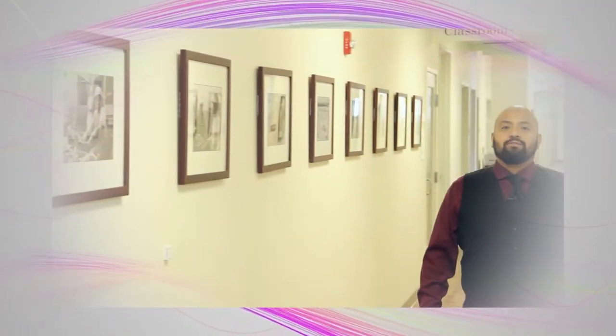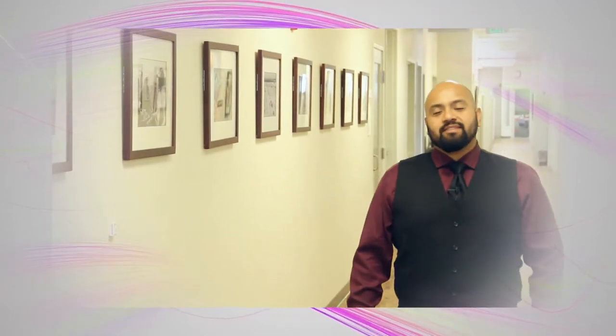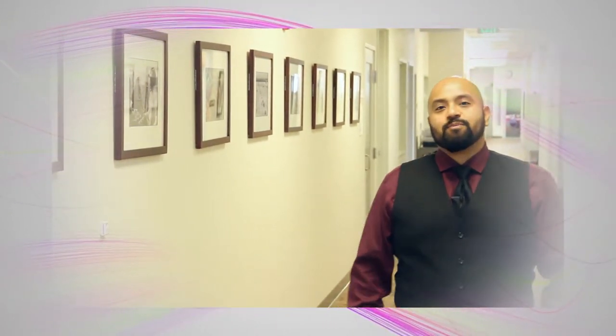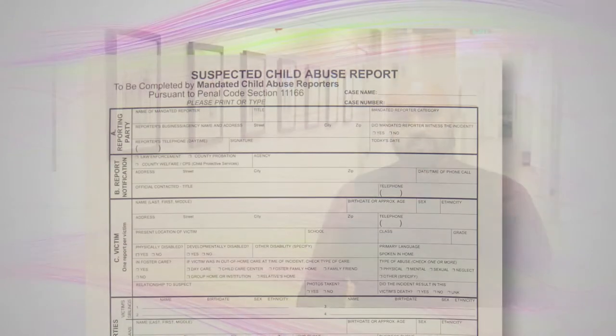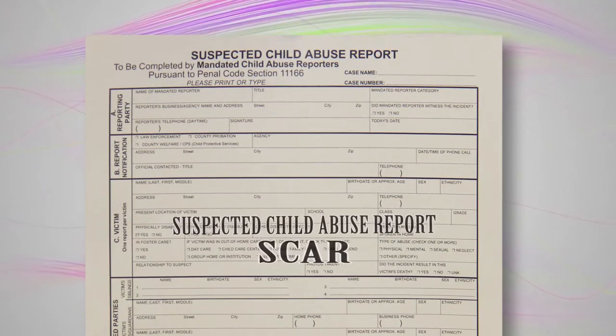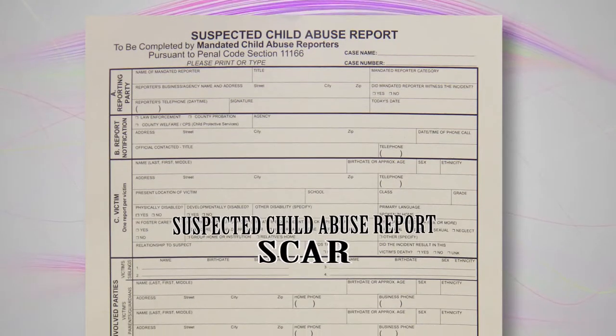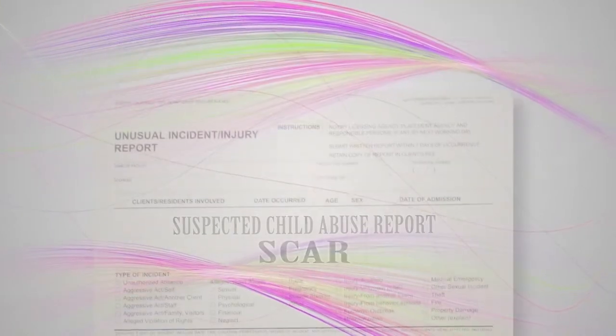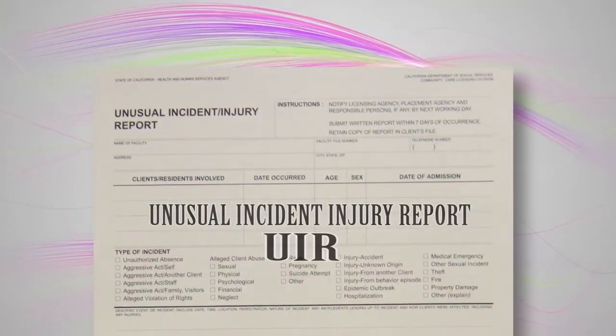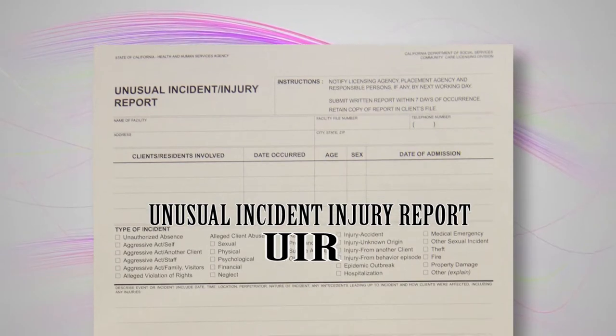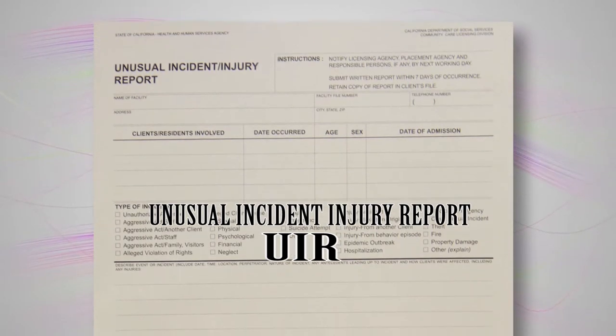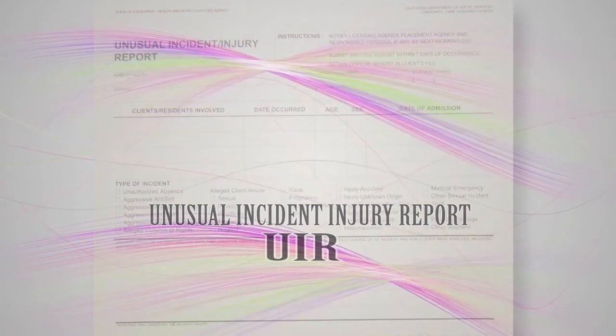For the Family Child Care Program option, it is the responsibility of the provider to complete the SCAR and the UIR. The Family Child Care Coordinator will support the provider with this process, using the Child Abuse and Neglect Reporting Procedure Checklist.